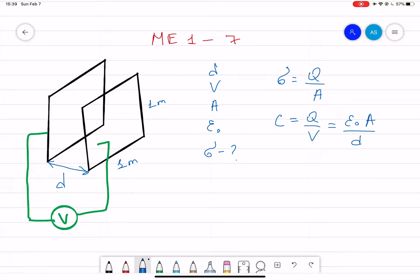From here we can see that we can make Q divided by A is equal to V multiplied by epsilon naught divided by d. This Q divided by A gives you sigma, that means it's equal to sigma.